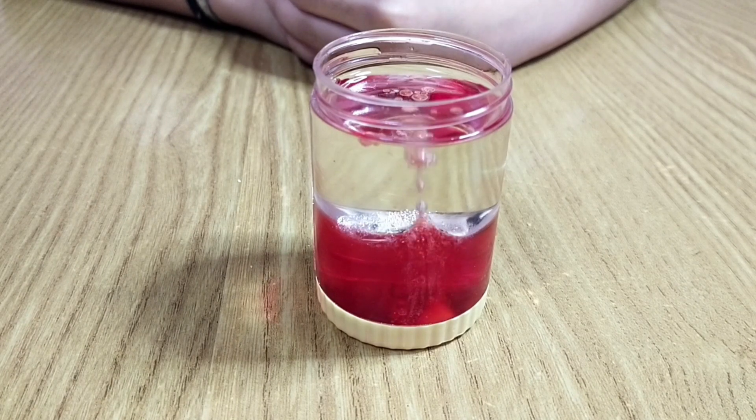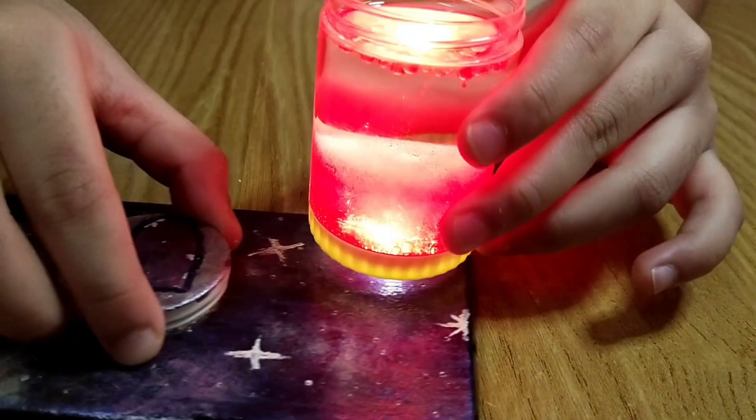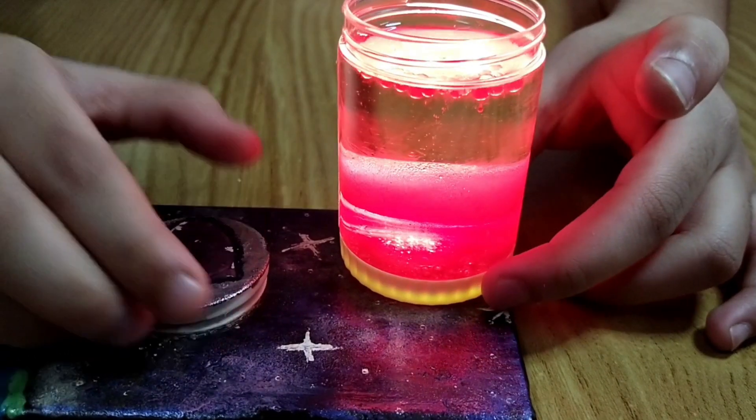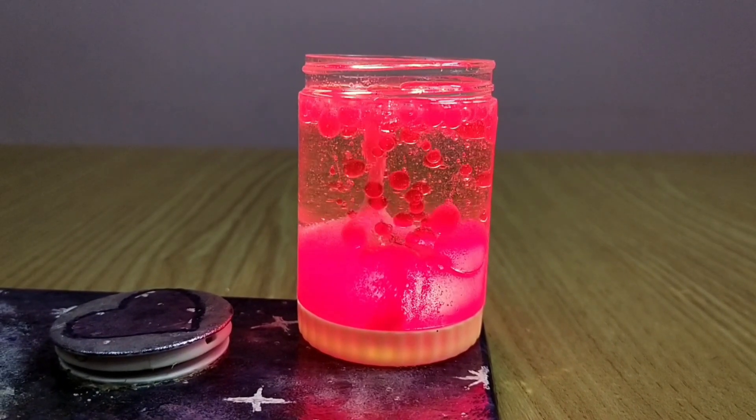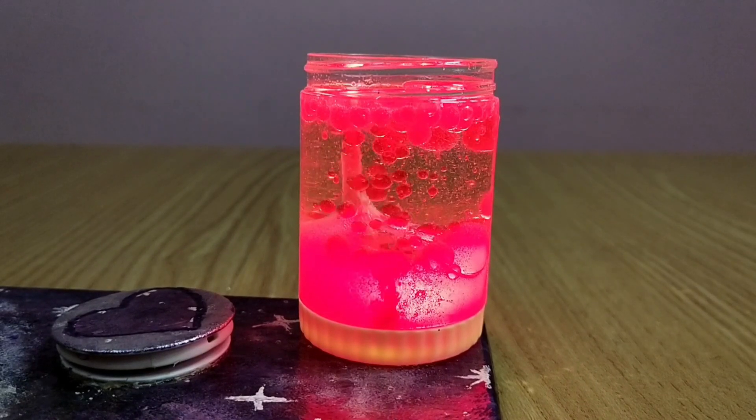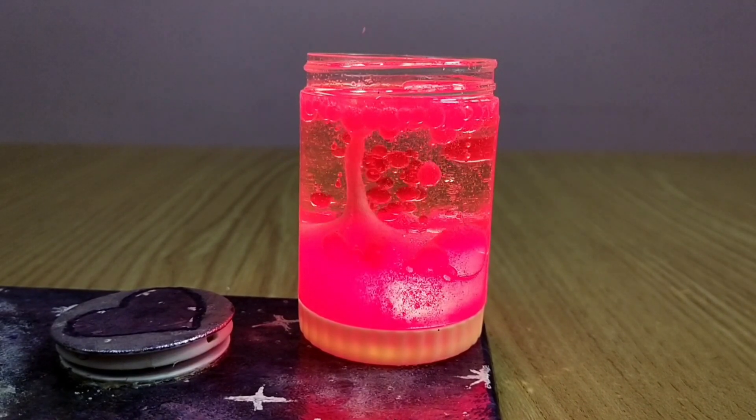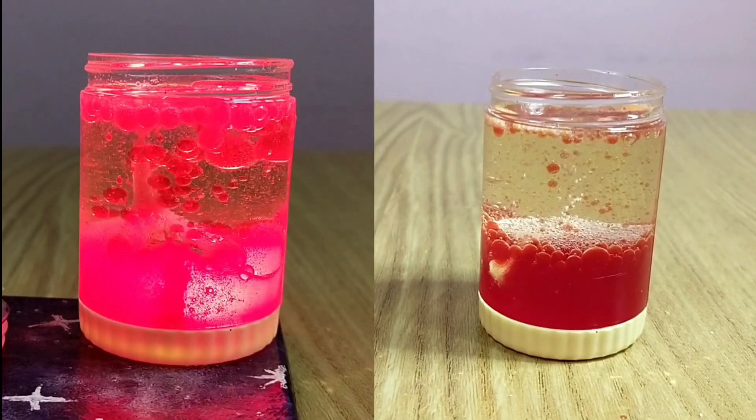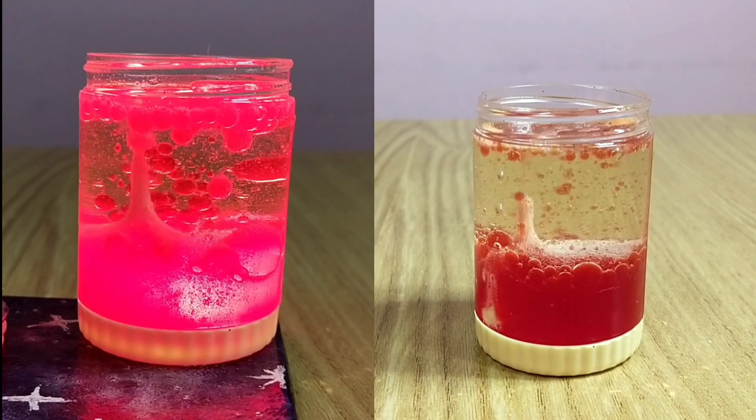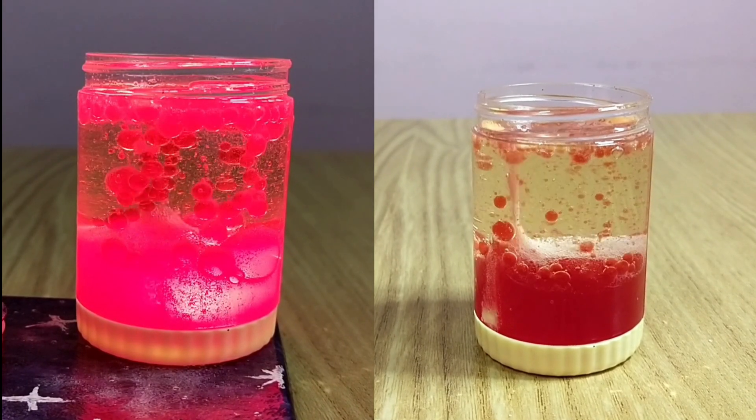Now our lava lamp is ready. Keep it over a flashlight and enjoy watching it. The tablet reacts with water and produces gas bubbles, and it sticks to the water droplets. As the water and gas combo is less dense than the oil, it rises to the top of the container. At the top, the gas bubbles pop and the air escapes, allowing dense water to sink back to the bottom again.